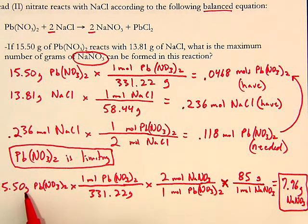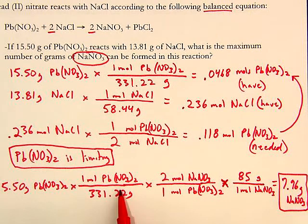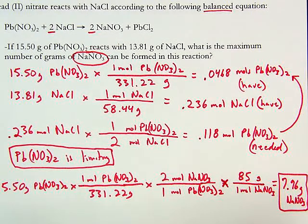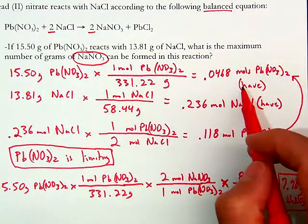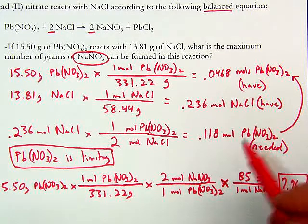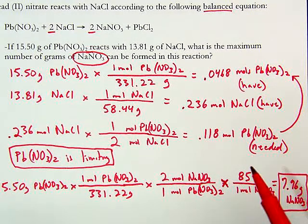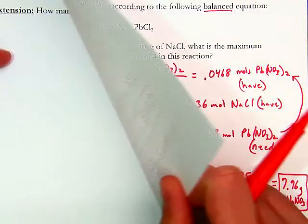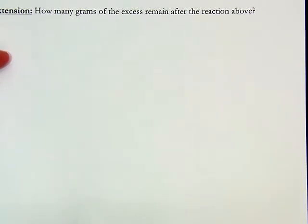That was a mass-to-mass stoichiometry problem: grams of Pb(NO₃)₂ to moles of Pb(NO₃)₂, to moles of NaNO₃, to grams of NaNO₃. But before we could do that we had to figure out which of the two was limiting by turning them both into moles and comparing what we have to what we would need to react all of the other. This is limiting reactant stoichiometry — figure out which reactant is limiting, then calculate how much product can be formed.